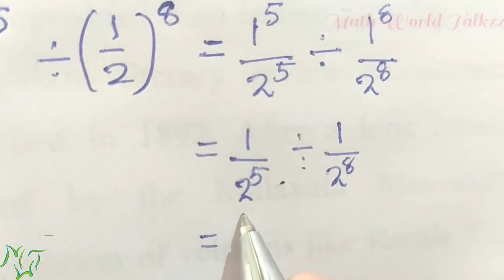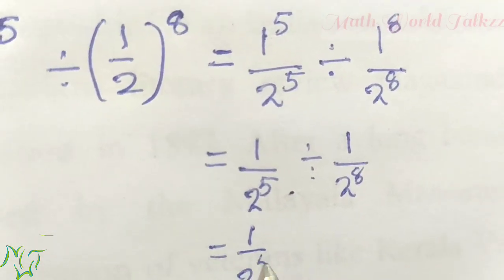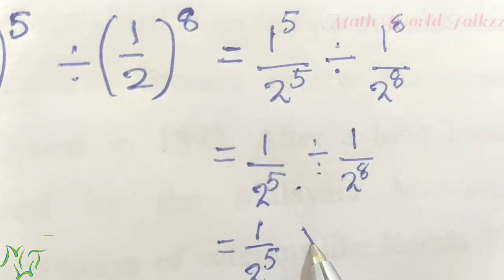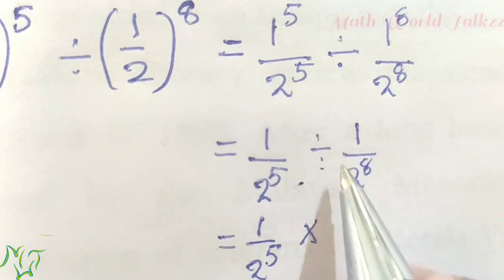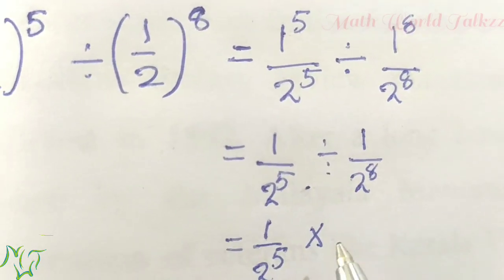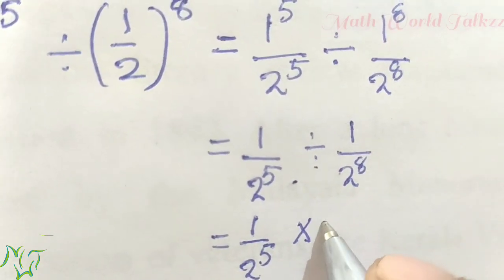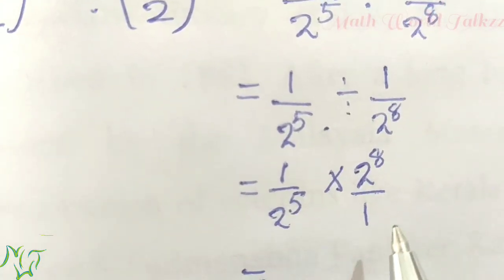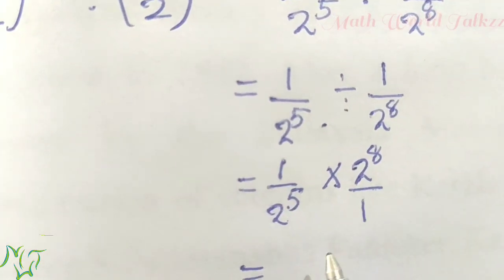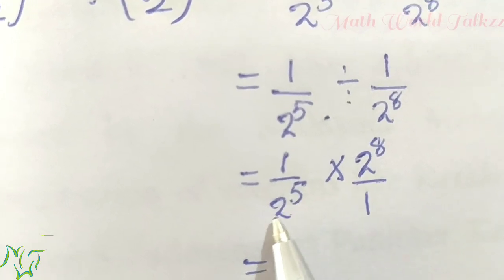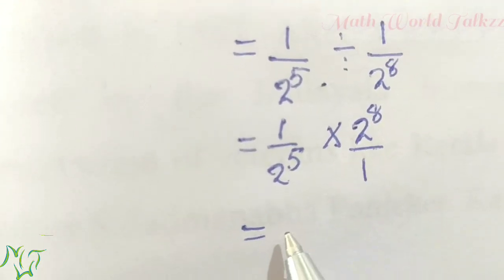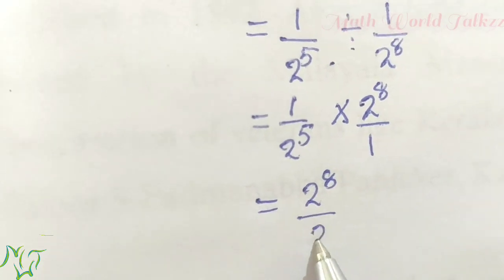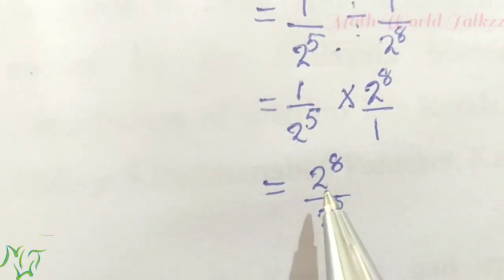We change the division to multiplication and write the reciprocal of (1 by 2) raised to 8. Multiplying fraction into fraction — numerator into numerator, denominator into denominator — we get 1 into 2 raised to 8 by 2 raised to 5 into 1, which is 2 raised to 8 by 2 raised to 5. Since 1 multiplied is the same number, this simplifies.